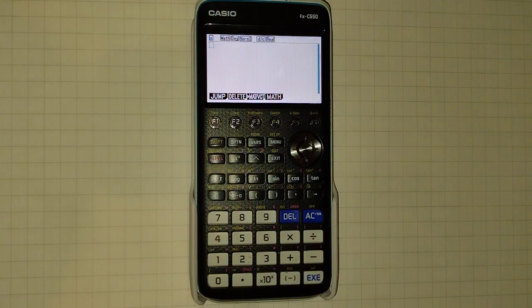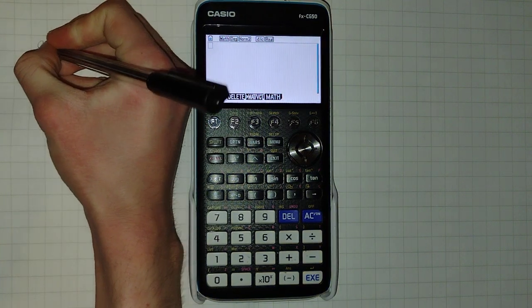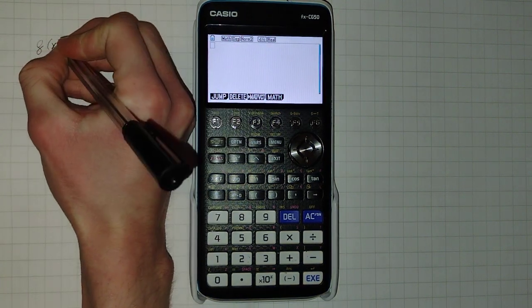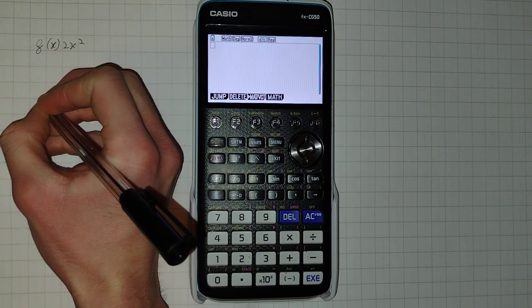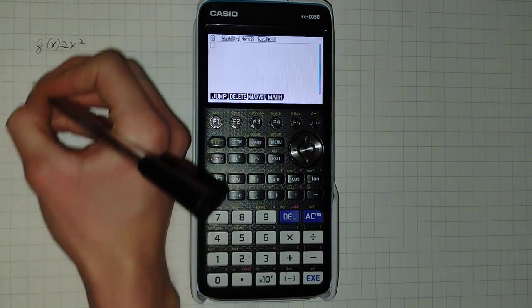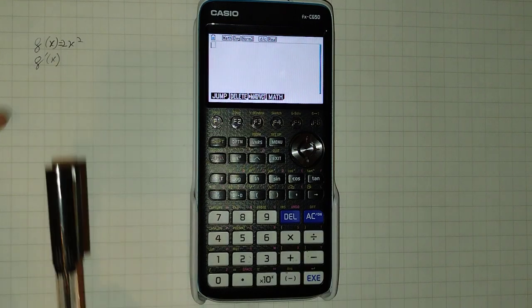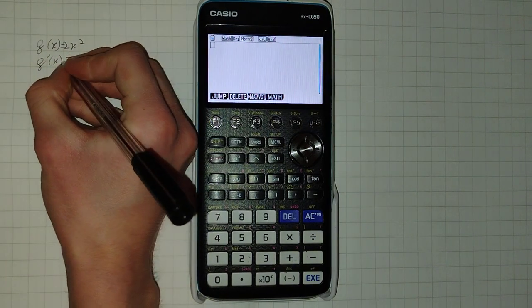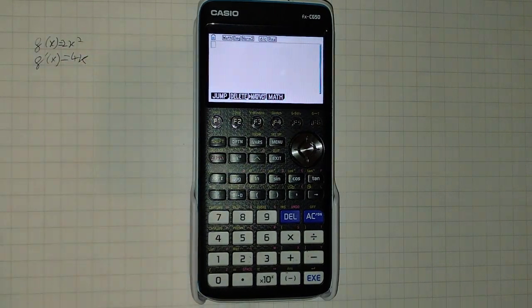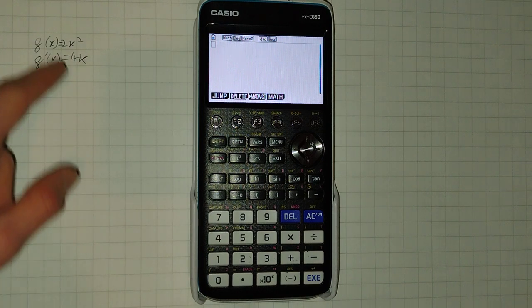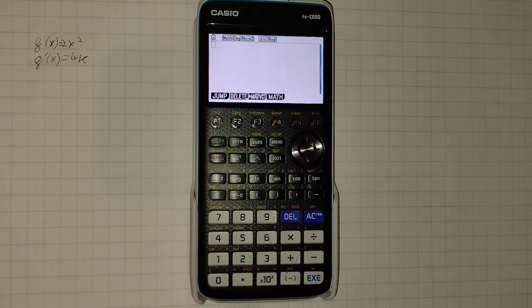Just to make it super clear what I mean by that, it means you can't give it something such as f of x equals 2x squared and then ask it to give you f dash of x. It can't do this. It can't then tell you that's 4x. You can only evaluate the gradient function at specific points. So to make that clear, I'll show you what I mean using this example.